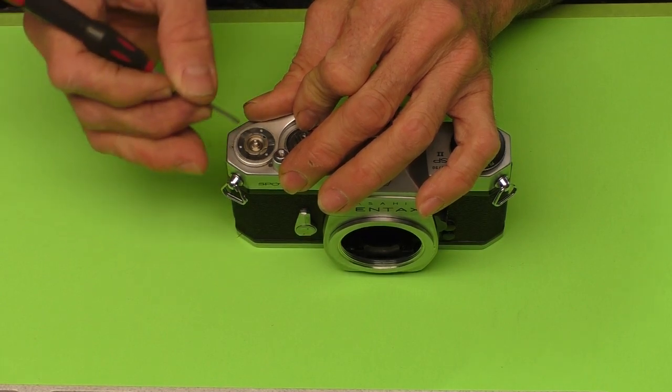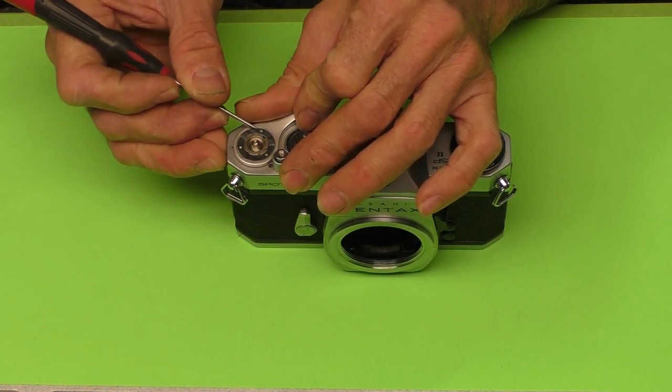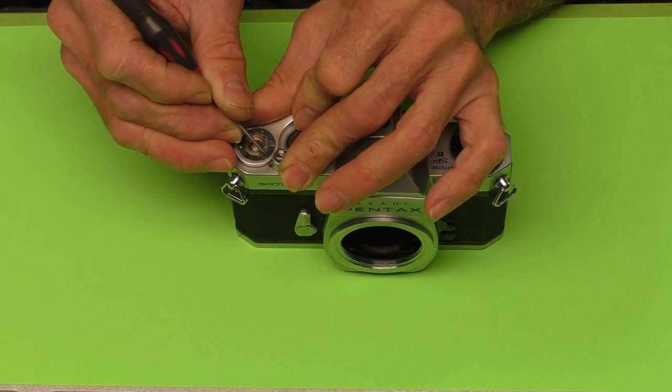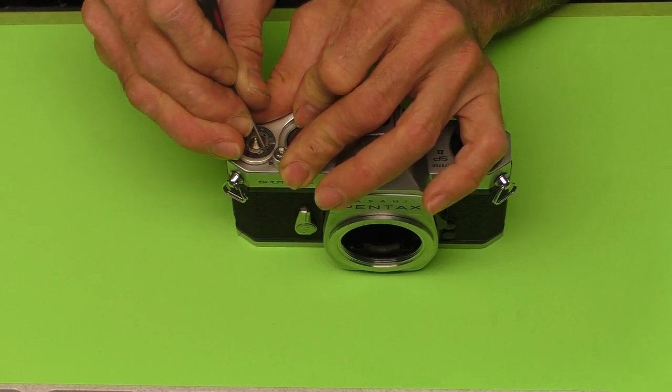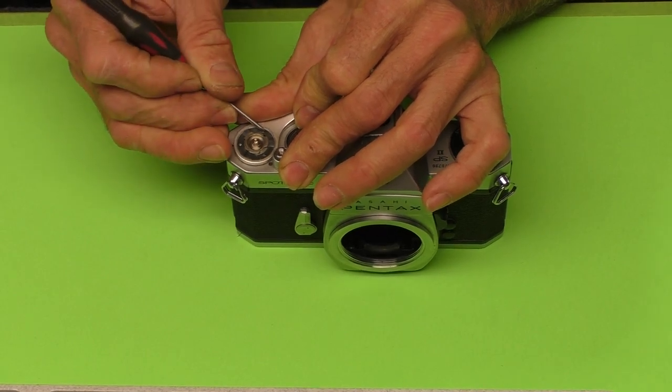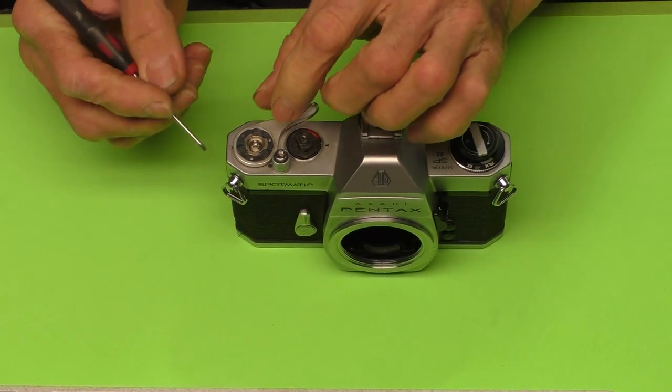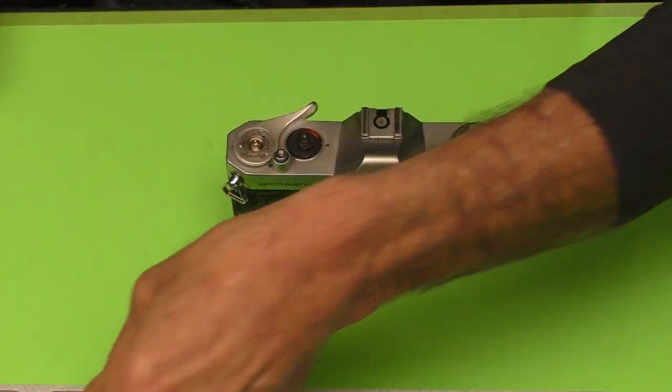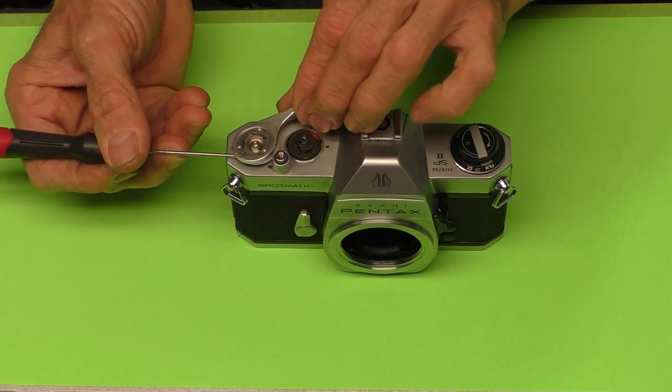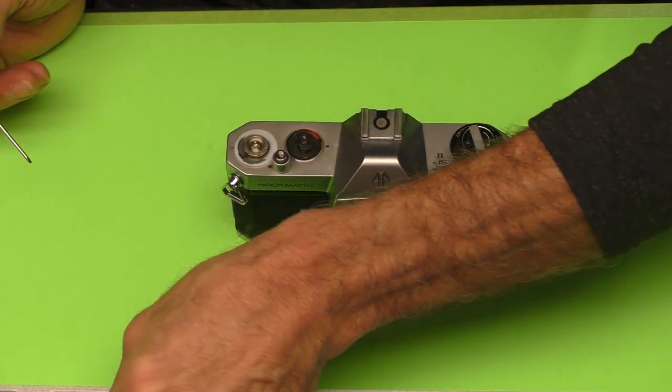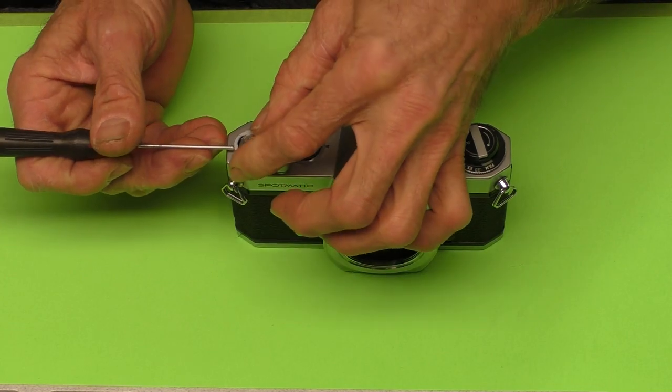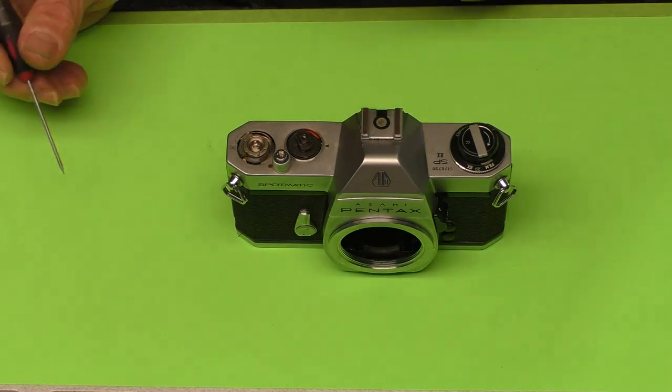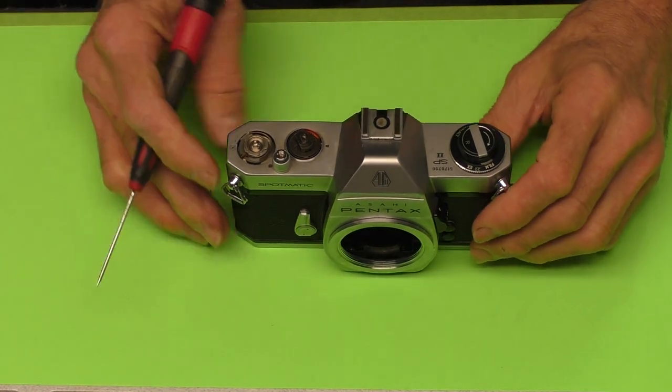This spring plate rotates either clockwise or counterclockwise. It doesn't really matter which way as long as you rotate it one way or the other. And then what happens is it comes out from underneath these little tabs and allows you to lift it off. And then we've got the film advance lever. That comes off. And finally, a plastic shim comes off. Take note of the position of that.